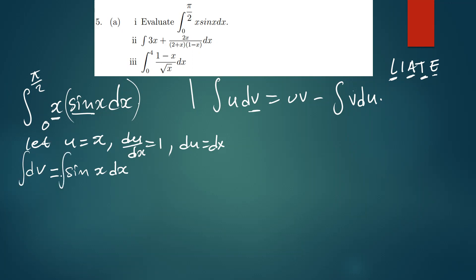We integrate both sides to get the value of v. Integrating dv means integrating sin(x) with respect to x. The integral of sin(x) is negative cos(x). The derivative of sin(x) gives cos(x), so integrating sin(x) gives negative cos(x). This is our value for v.